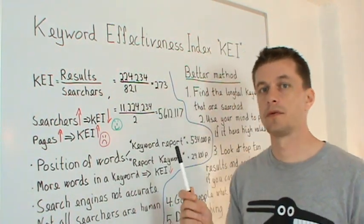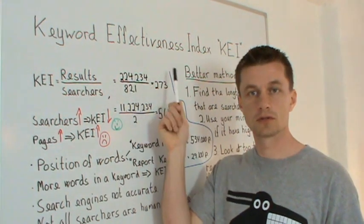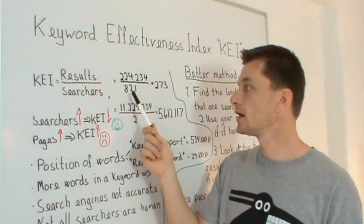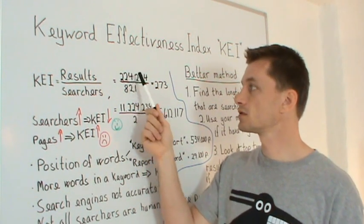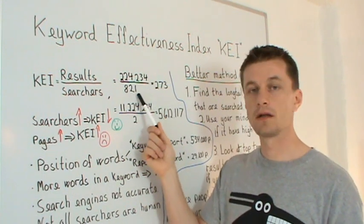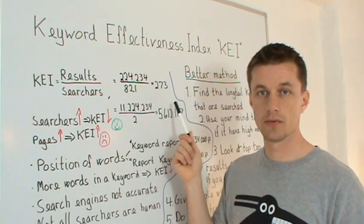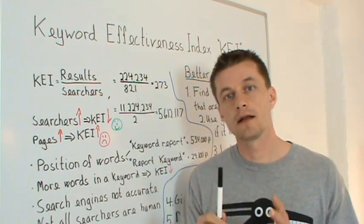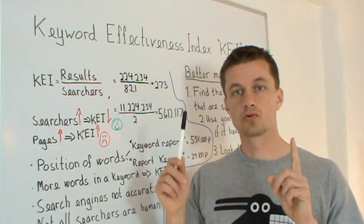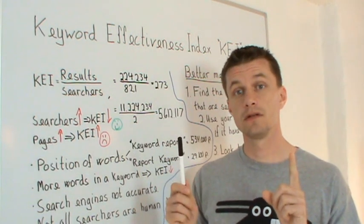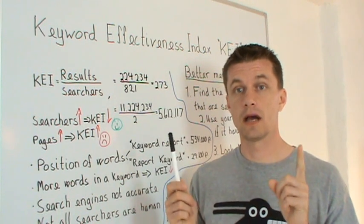Let's give an example with a bit of numbers. Let's say we find that there is 224,000 something results and 821 searches a month. Then you take the 225,000 something and divide it with 821 and then you get a KEI of 273. That means that for each searcher there will be 273 pages competing for one searcher. That's basically what KEI says.